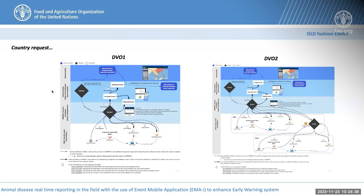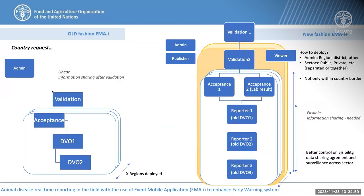In the past, the old MII provided two types of setup: the DVO1 flow or the DVO2 flow. Based on this, you had three or four different types of users who could participate in the reporting process. This old-fashioned way was more linear and information was shared only after validation at the national level. With the new flow of MII, you can still report events in the same linear way following the surveillance system, but we now have an extended set of user roles.